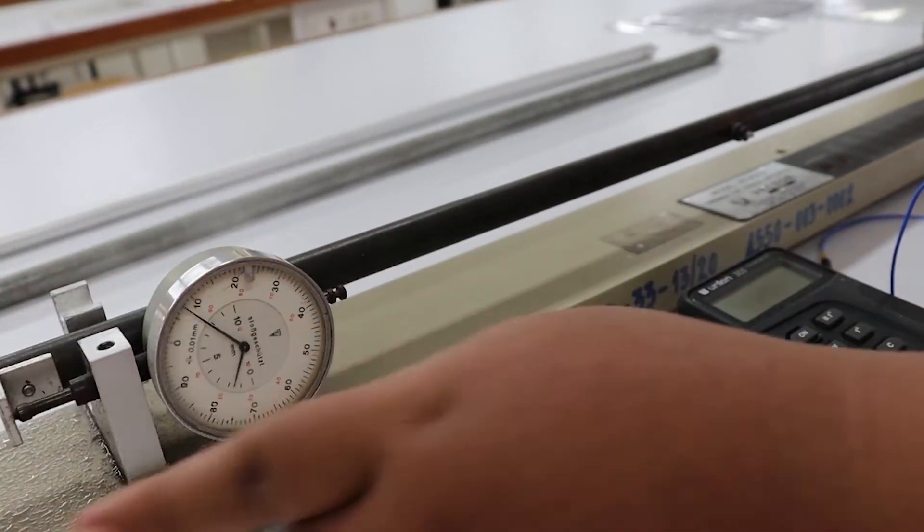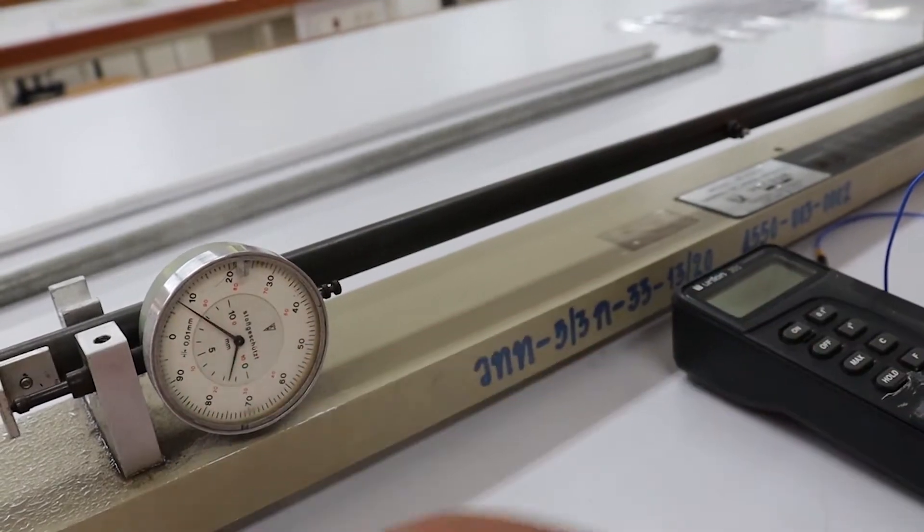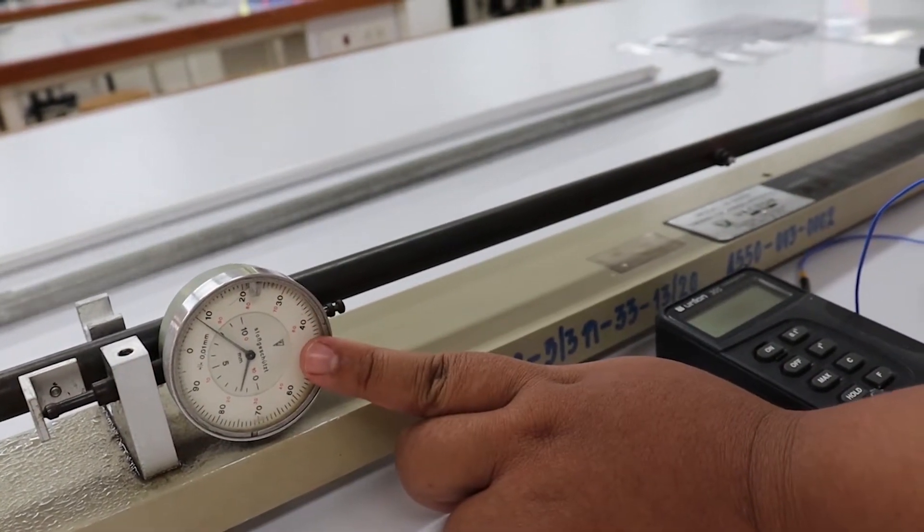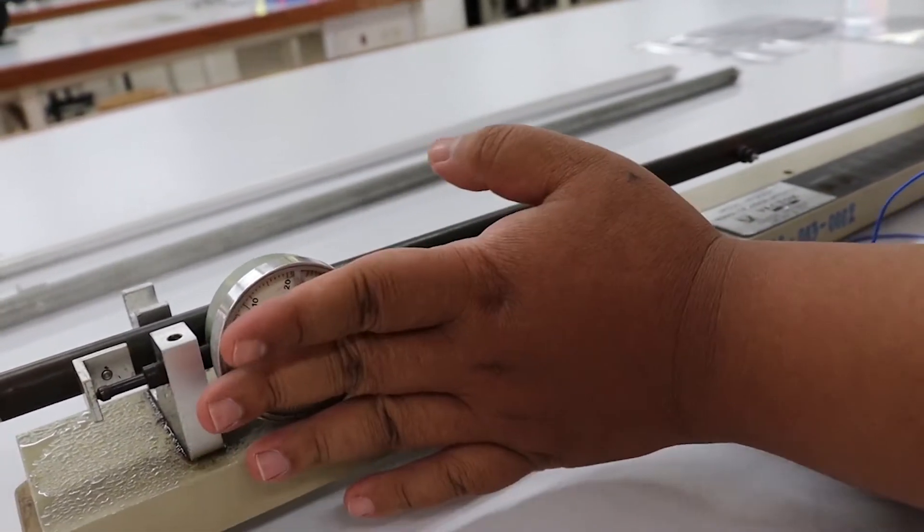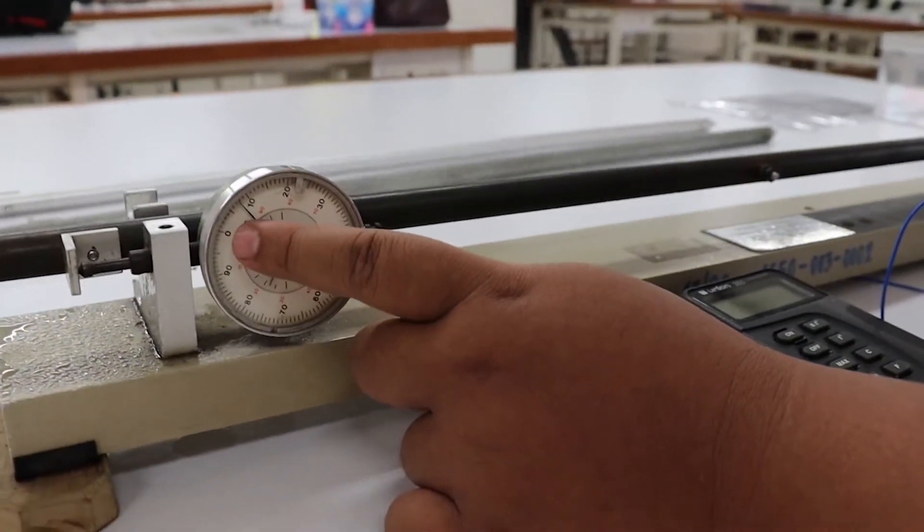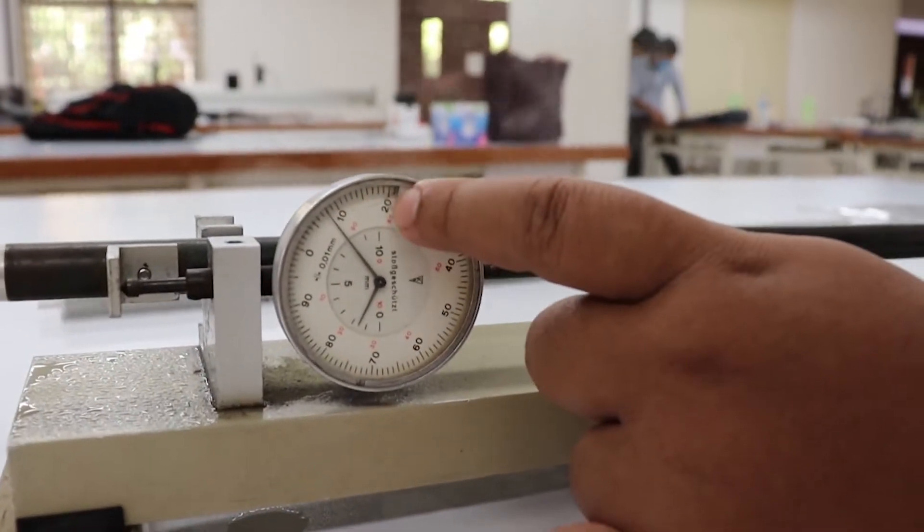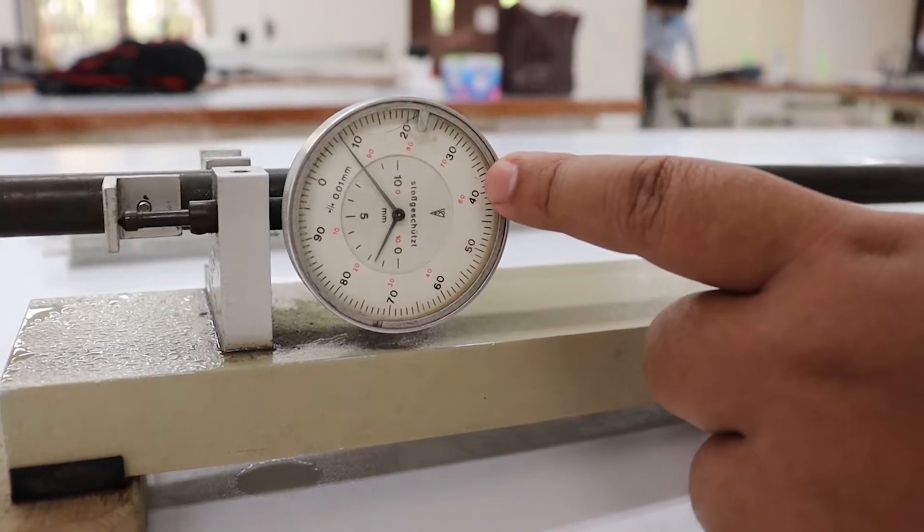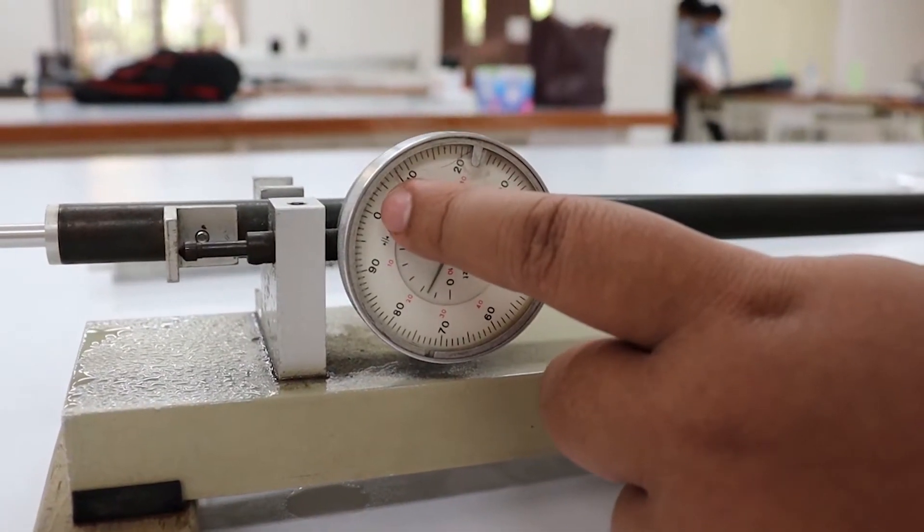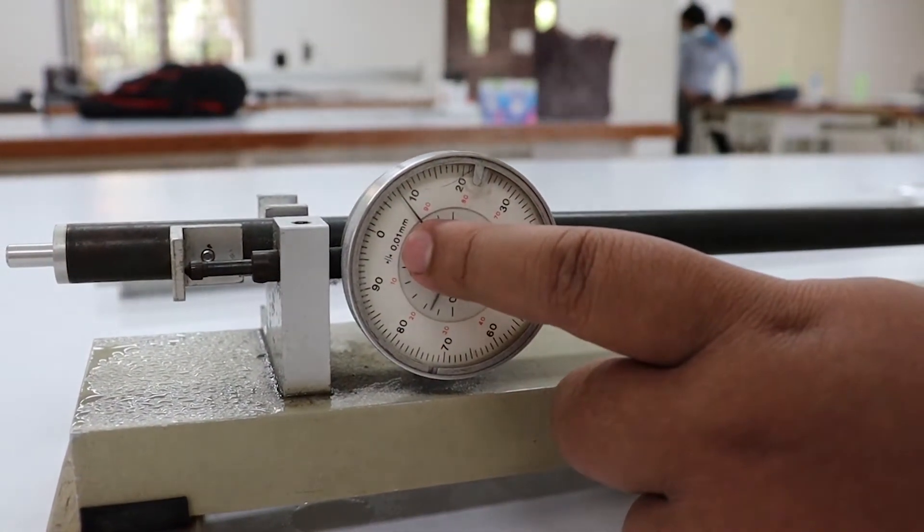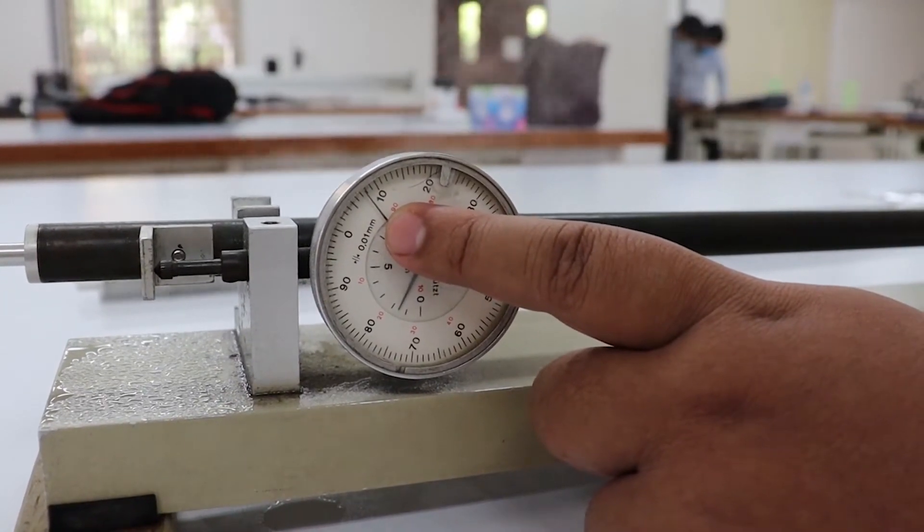When we heat the metal rod, the rod will stretch out so that the right angle plate will move. We can read from the dial gauge how much it spreads out. The dial gauge has scales 0, 10, 20. The outer scale is in the unit of 0.01 millimeters.